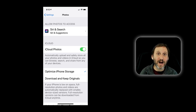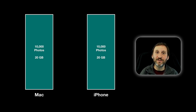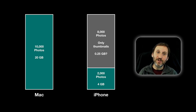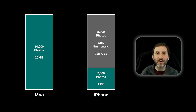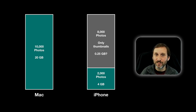But if you select Optimize iPhone Storage, you get a mix — and this is what you want. For instance, you still have all your photos on your Mac, but on your iPhone you may have something like 2,000 photos at full high resolution and 8,000 photos as only thumbnails. You can still see them, but the full high resolution versions aren't there anymore. The versions on your phone are much smaller and more compressed, taking up only a fraction of the space.